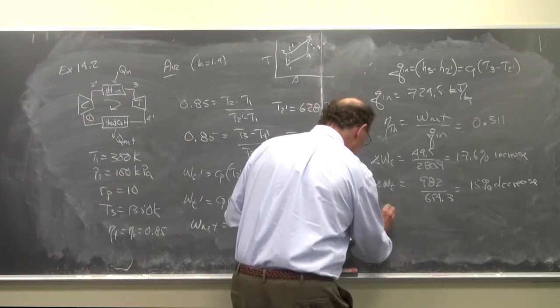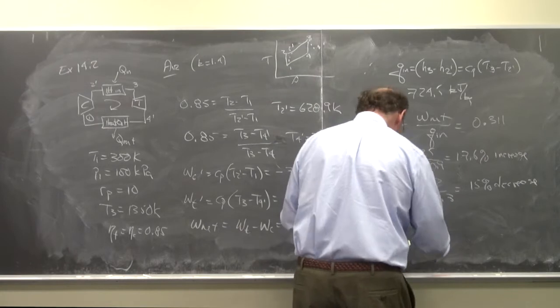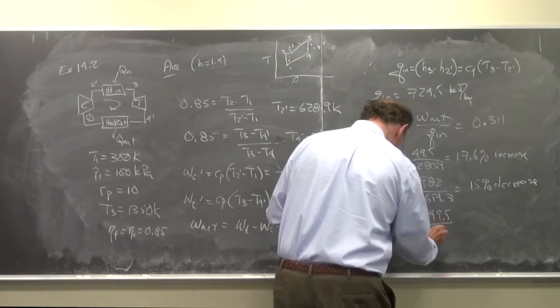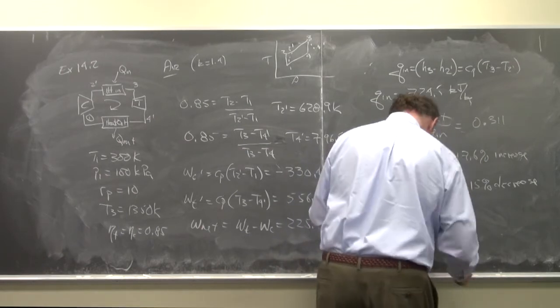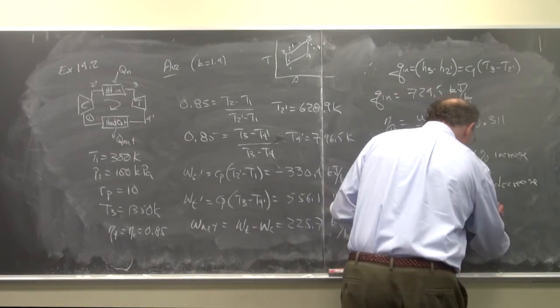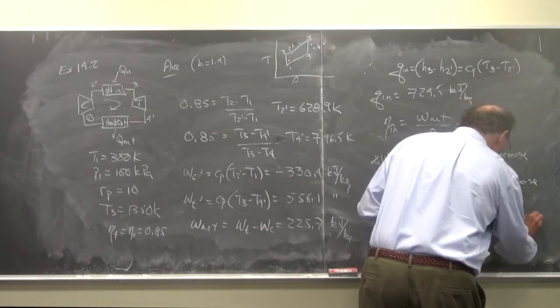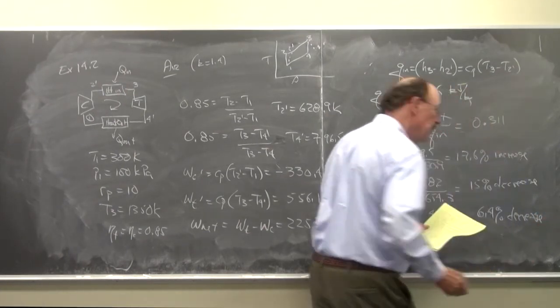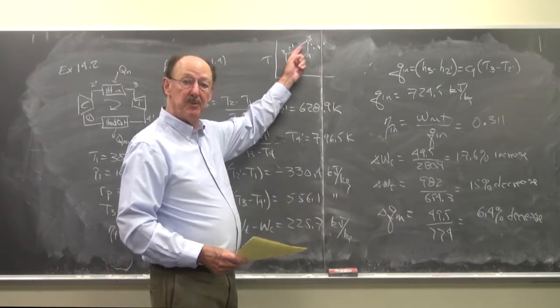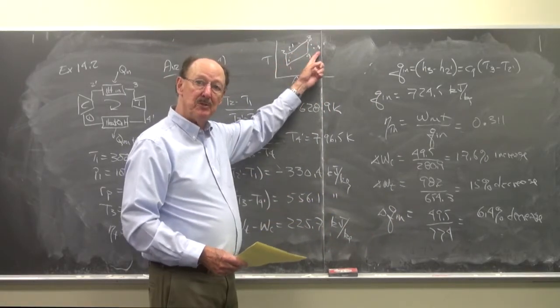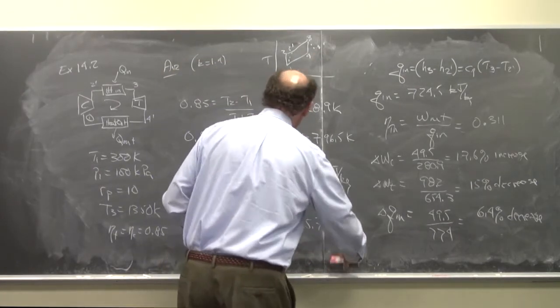The change of the heat in is 49.5 over 774, is a 6.4 percent decrease. There was less heat in because I only have to add heat from 2 prime to 3 rather than from 2 to 3, so there's less heat that they have to put in.